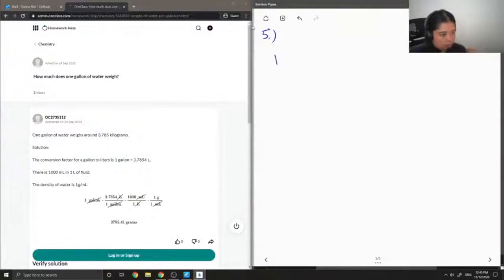Let's recall that one gallon is the same as 3.785 liters, and there are 1,000 milliliters in one liter.